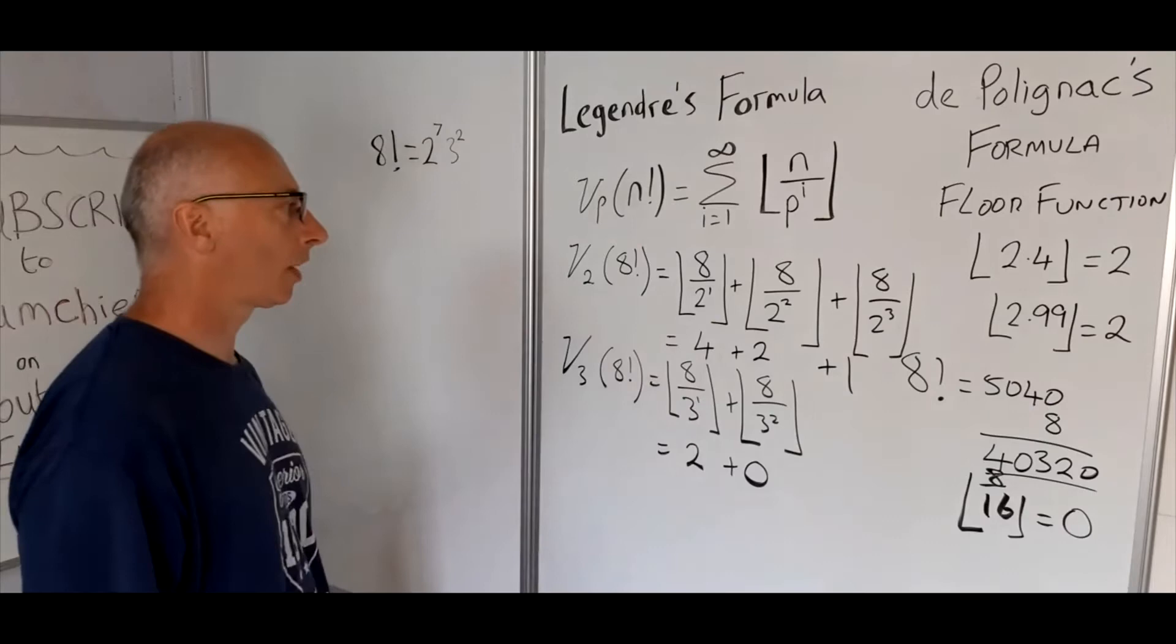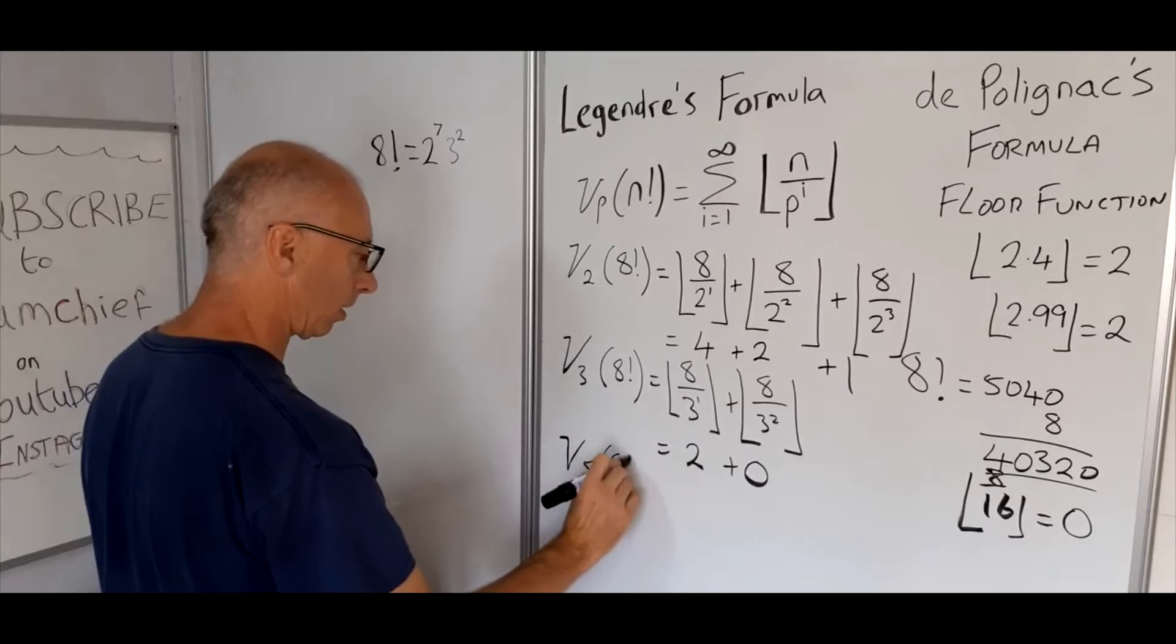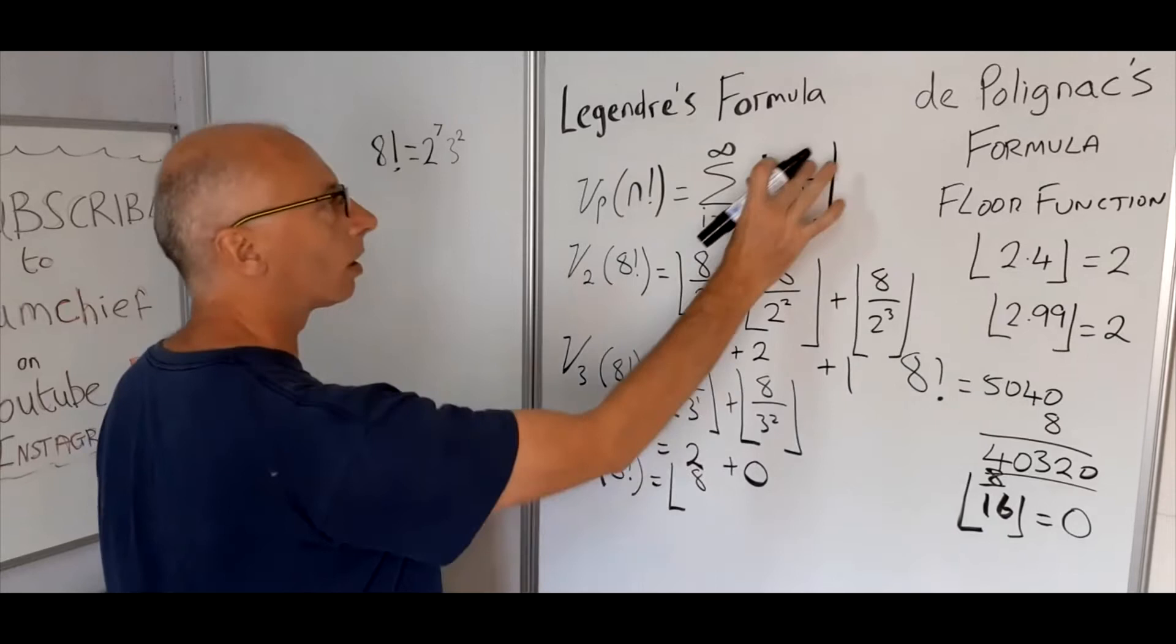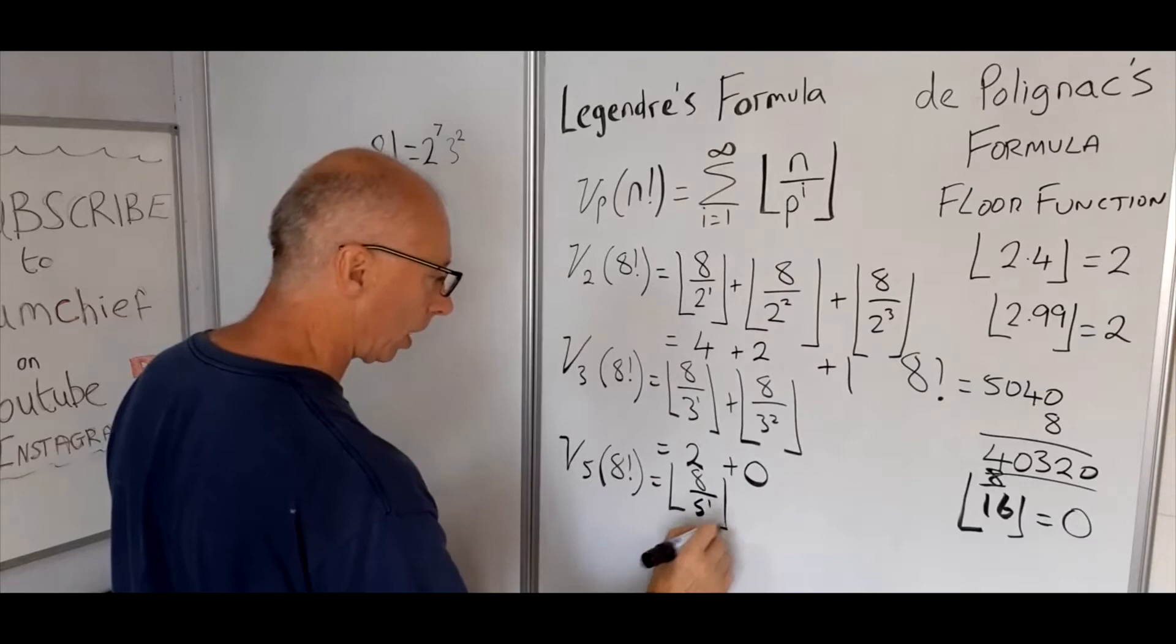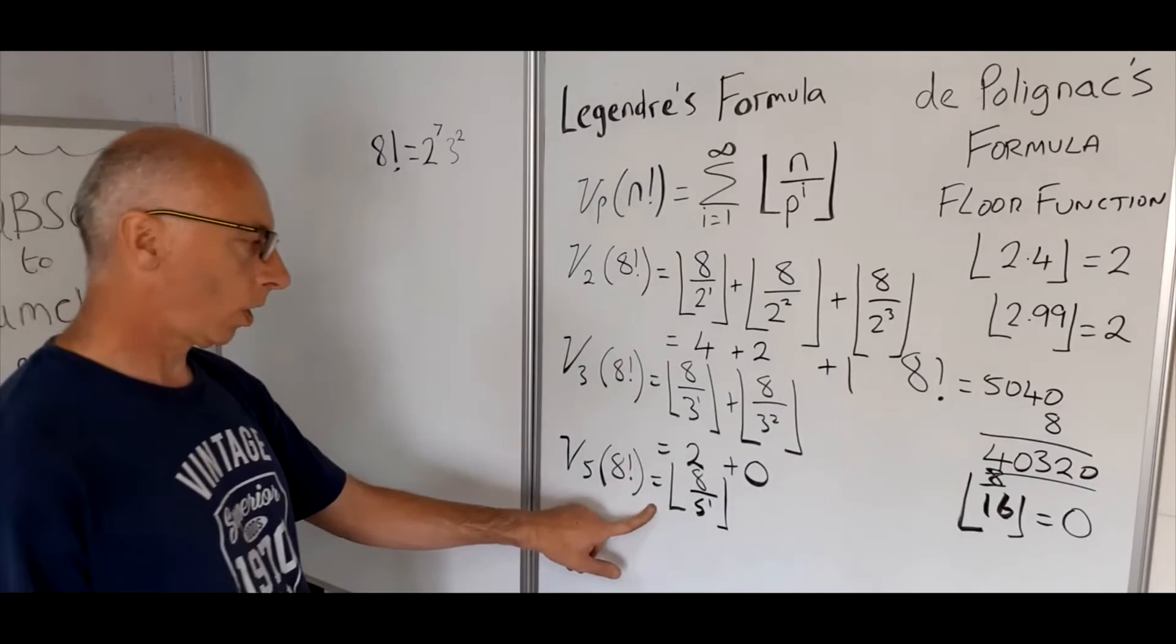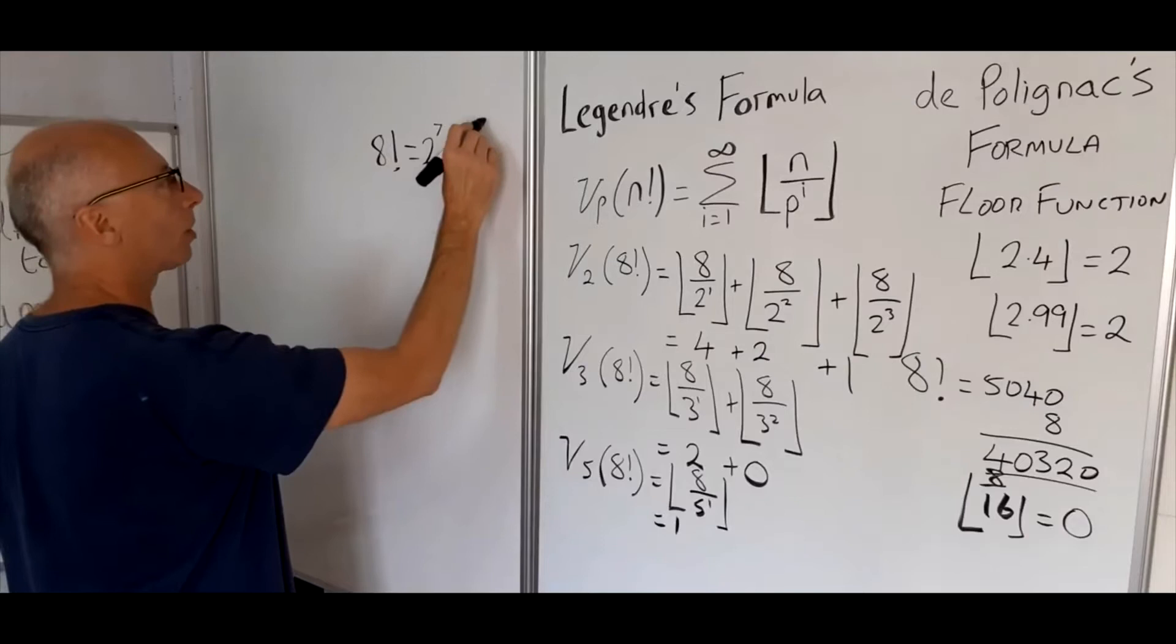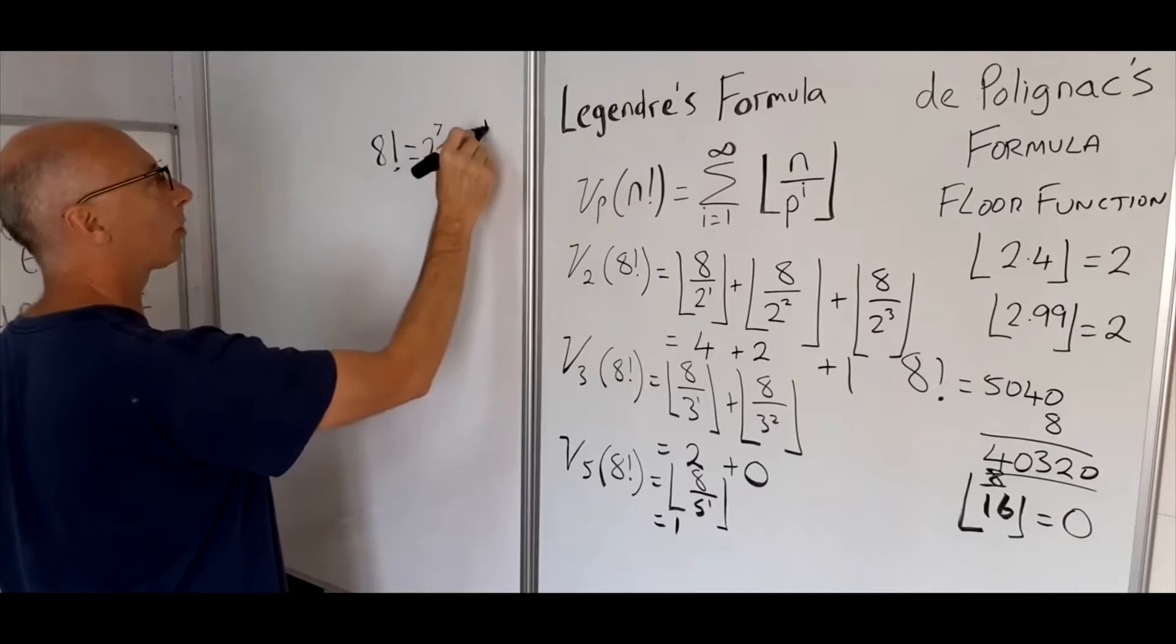Right, now let's try number 5, that's the next prime factor. So nu_5 of 8 factorial. Floor function, n is 8, p is our prime number 5 to the power of 1. So the prime factorization of that is just going to be 1, yes, that's 1. So now we can say it's also 5 to the power of 1. Let's write this a little bit clearer: 2 to the power of 7, 3 to the power of 2, 5 to the power of 1.